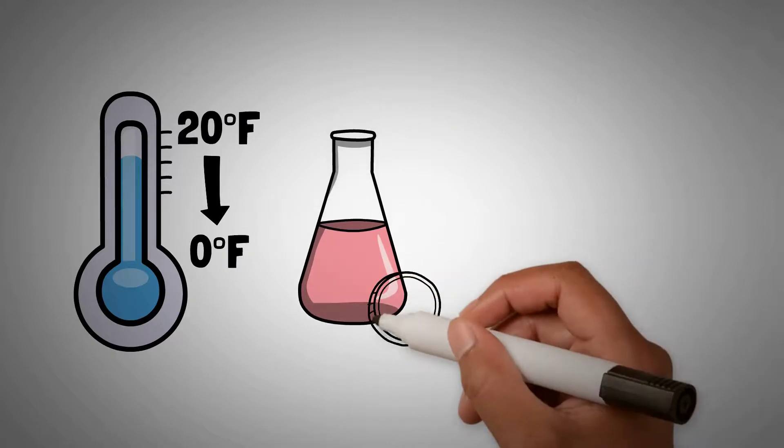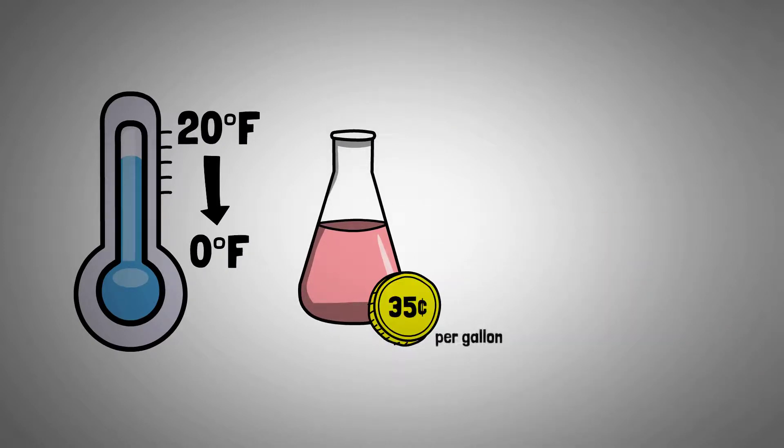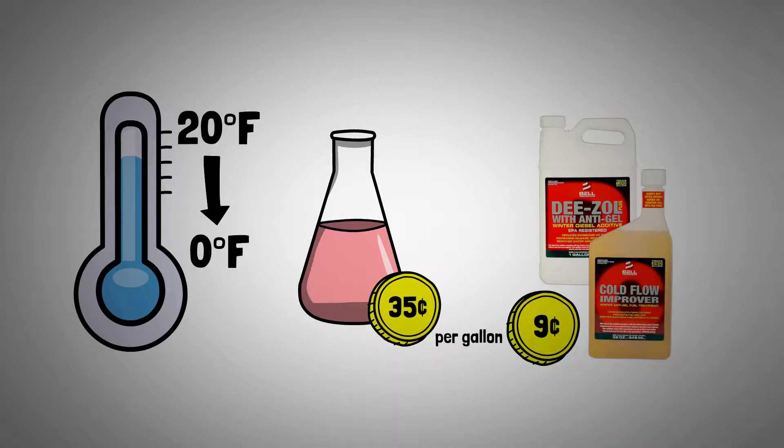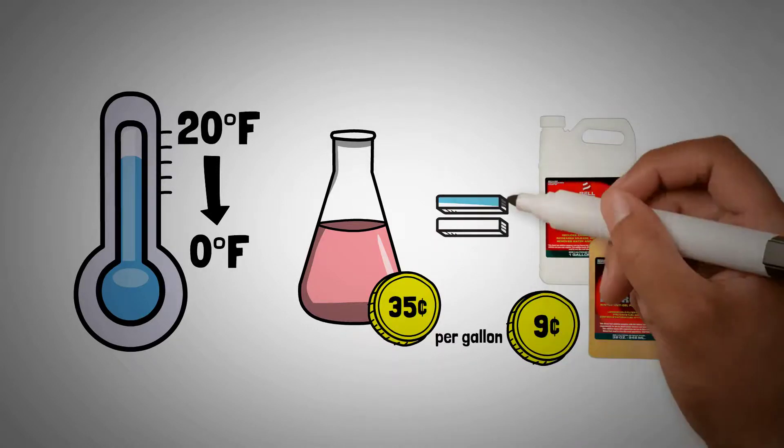that might cost you $0.35 a gallon to do that with kerosene, versus just $0.09 a gallon to treat it with anti-gel to get that same level of protection.